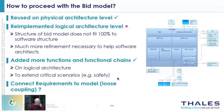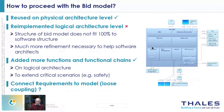We experienced that logical architecture diagrams with functional chains are very readable by customers and system architects. But software architects much more often prefer the same flow displayed as a sequence diagram, which is often much better understandable for them. So we produced some figures twice: once as a logical architecture diagram with a functional chain, and once as a sequence diagram.